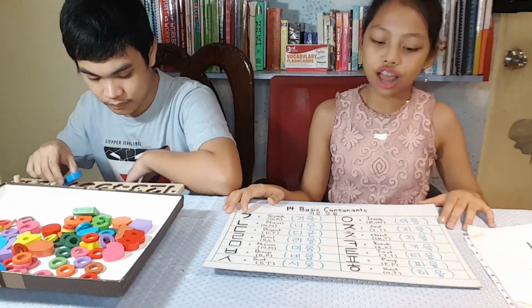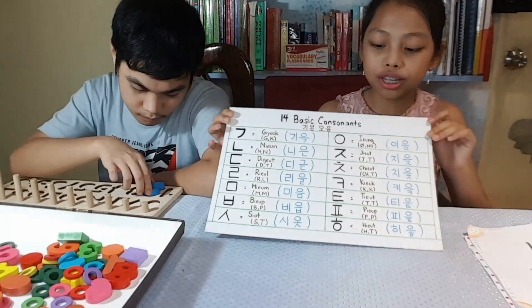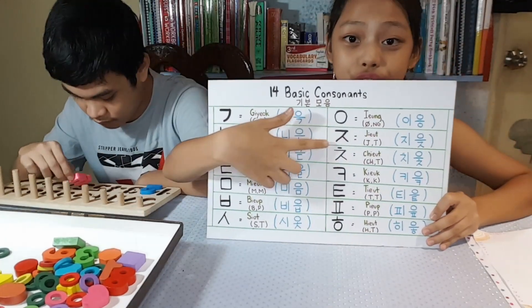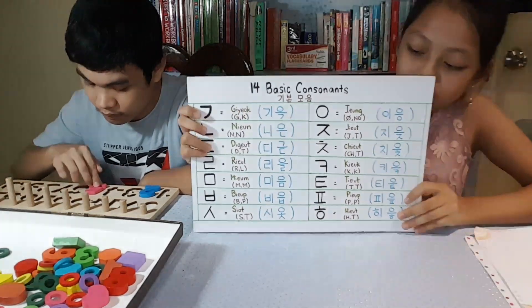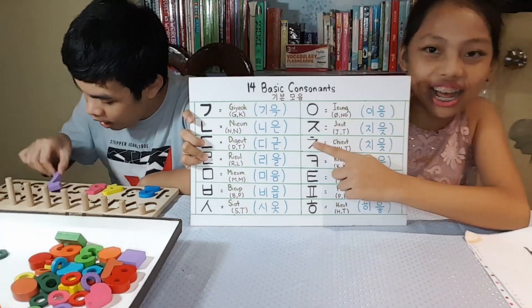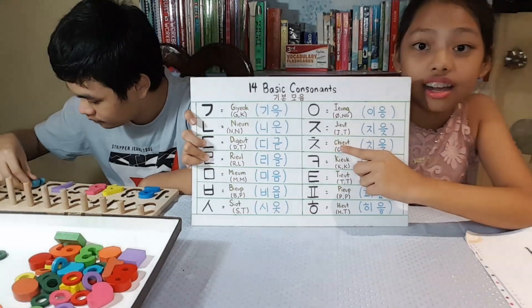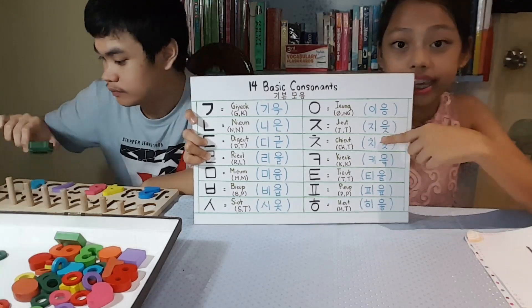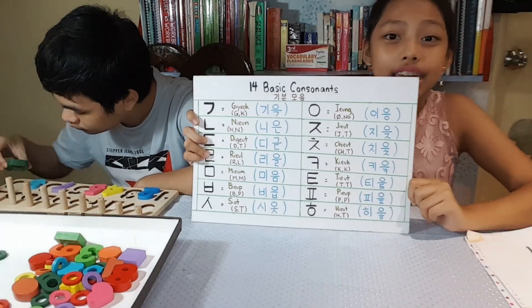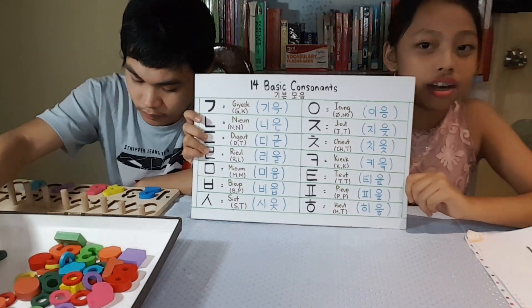Always remember there is no letter Z in Hangul, but we use the consonant Ji-ut. After Ji-ut is the next consonant. This is the Hangul symbol or the Korean alphabet character. The romanization is Chi-ut, and this one is the Hangul name. The consonant Chi-ut is CH sound in the beginning but T sound in the final or in the end.